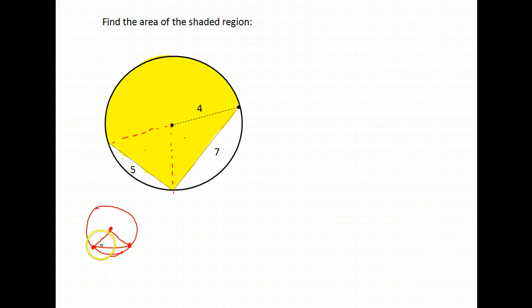Notice that we have our full sector, which is the ice cream cone and the ice cream on top. Then we have the triangle, which would just be the shape of the cone. And then you could also just have the ice cream. This part cut off by the chord is called a segment of a circle.